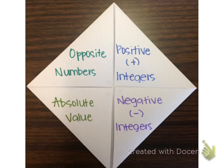You'll want to set it up similar to how I have mine set up, so please take a moment to pause your video and write the following terms on the outside of the flaps: opposite numbers, positive integers, negative integers, and absolute value.